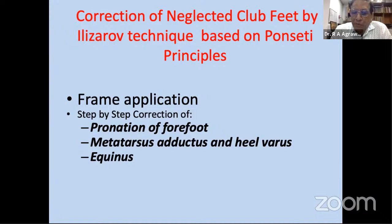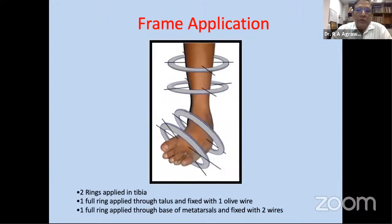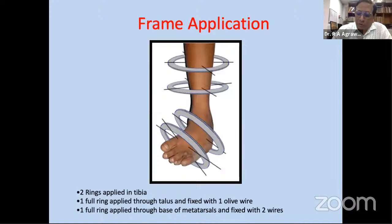I am presenting correction of neglected clubfoot by Ilizarov technique based on Ponseti principles. There are two types: those requiring bony surgery and those requiring only soft tissue distraction. By Ponseti principles we follow three steps: step-by-step correction of forefoot pronation, step-by-step correction of metatarsal adduction and heel varus, and finally equinus correction. The configuration uses two rings in the leg and two in the foot, with an olive wire for the talus. Full rings are always applied because without them it is very difficult to correct pronation deformity.